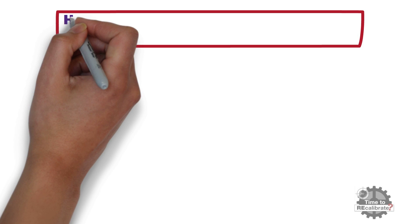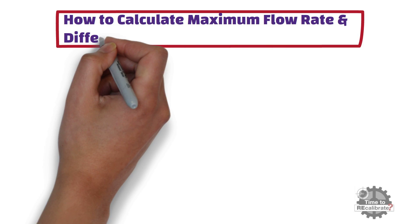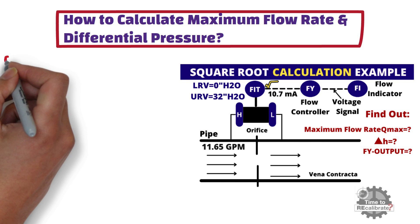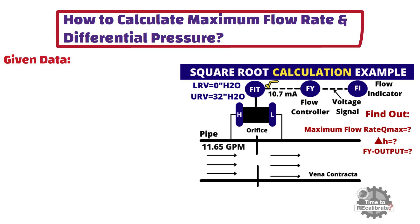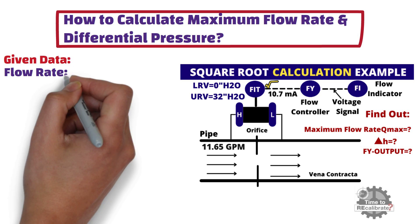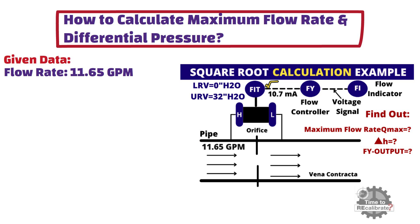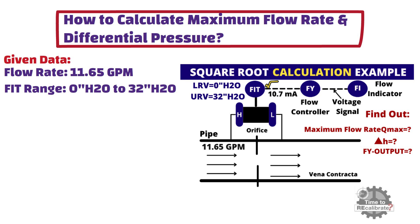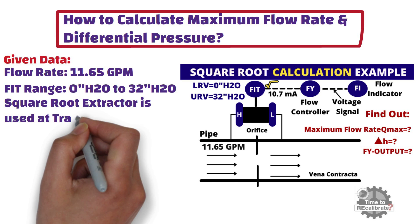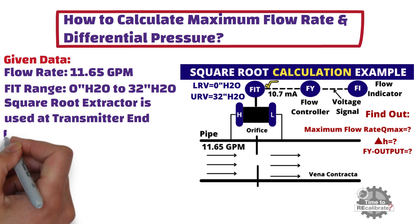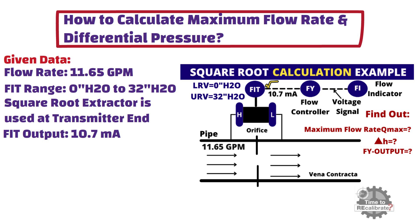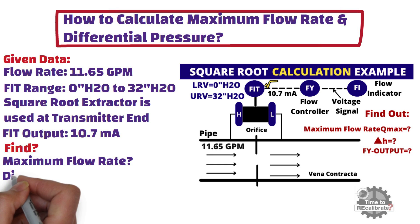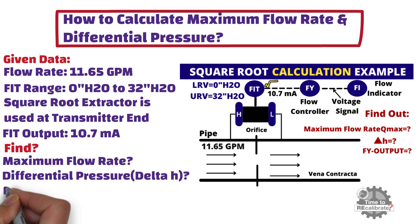First, let's learn how to calculate maximum flow rate and differential pressure in the following example. We will write down all the information already given: flow rate is 11.65 GPM, the range of the flow indicator transmitter is 0 to 32 inch H2O, a square root extractor is being used at the transmitter end, and 10.7 mA is the output of the transmitter. Using this information, we will calculate maximum flow rate, find differential pressure, and lastly calculate flow controller output.